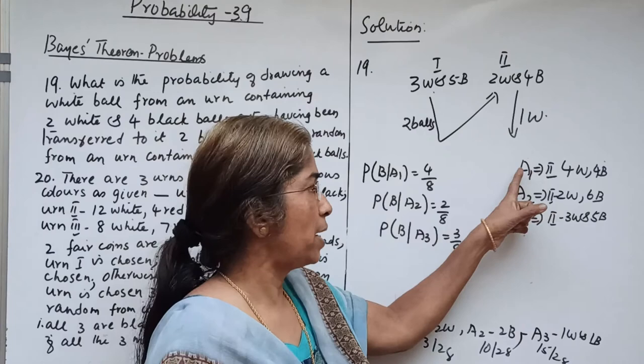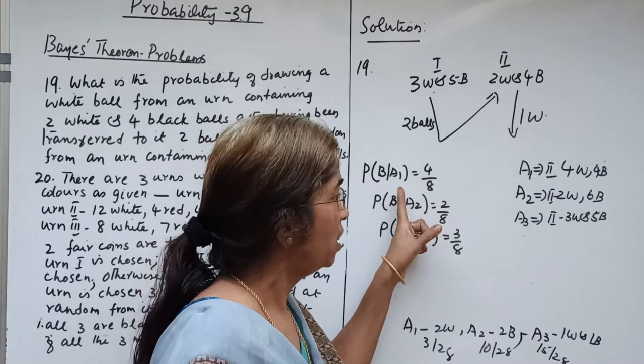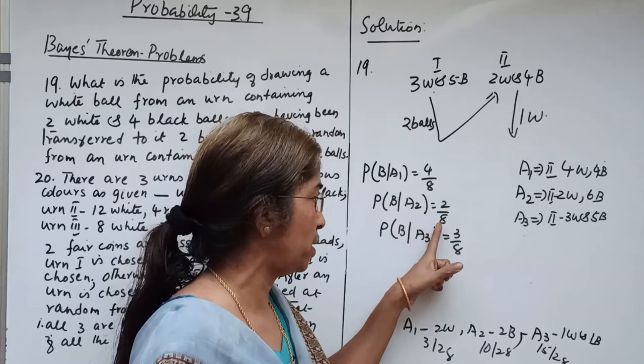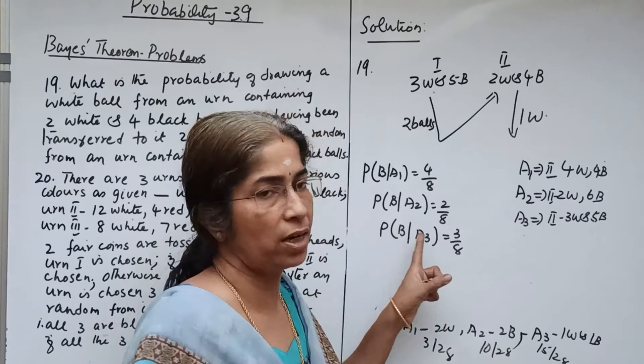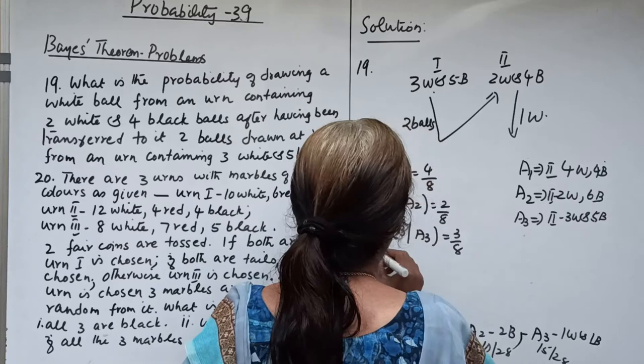A1 means 4 white and 4 black in urn 2, so drawing 1 white ball gives probability 4 by 8. A2 means 2 white and 6 black, so drawing 1 white ball gives probability 2 by 8. A3 means 3 white and 5 black, so drawing a white ball gives probability 3 by 8.